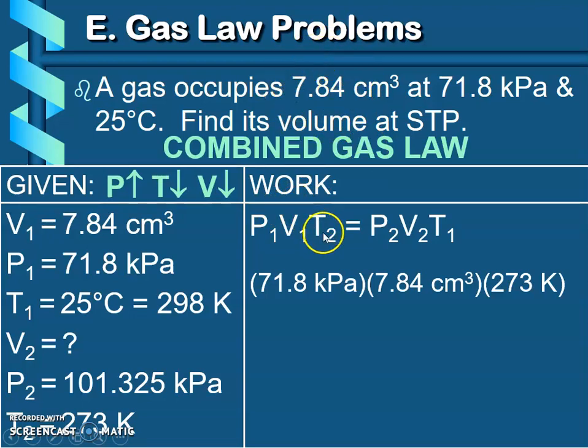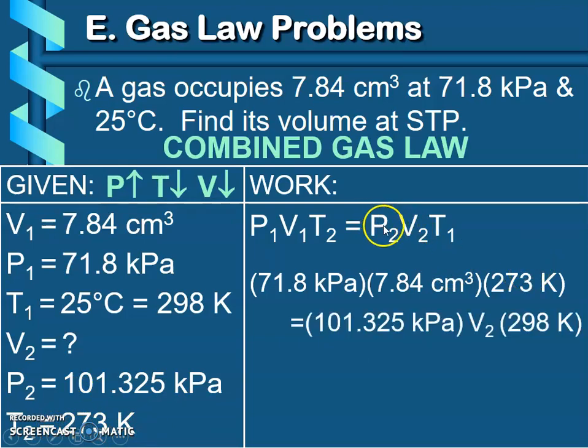And then I need my T2, my second temperature, which is the 273. And that's going to equal my P2, so pressure 2, that's the 101.325 at standard. My V2 is what I don't know, that's what I'm solving for. And then T1, my starting temperature, which was 25°C, which we converted into Kelvin, so that's the 298.